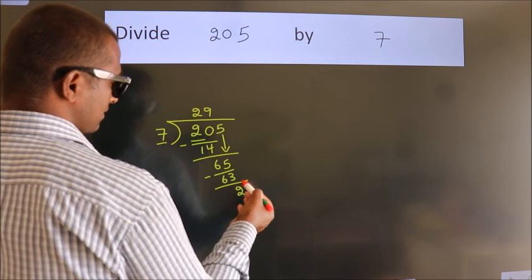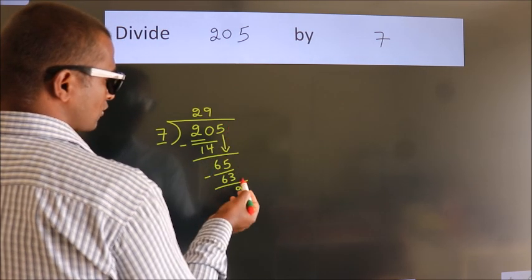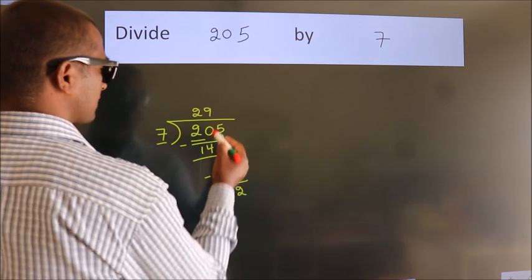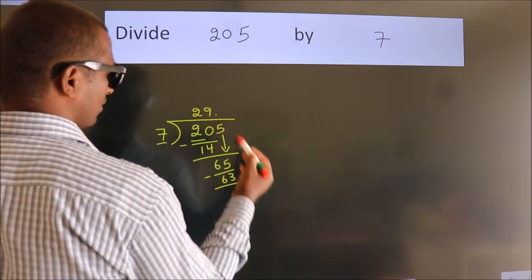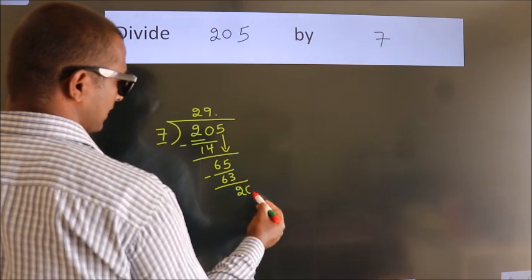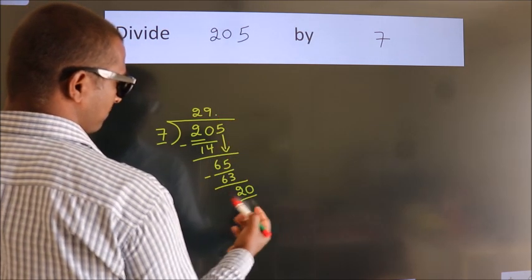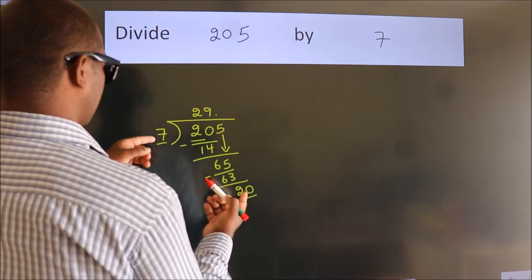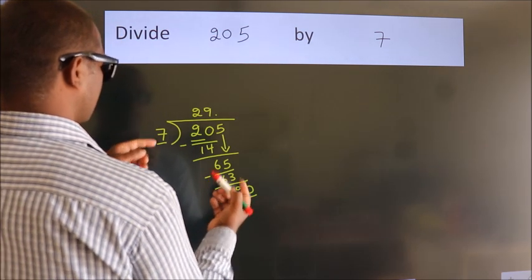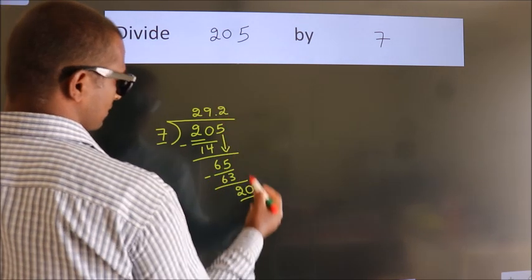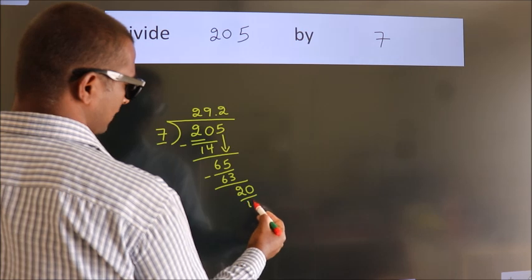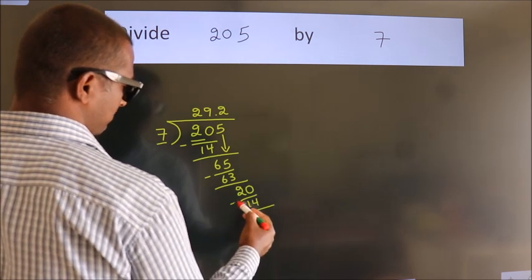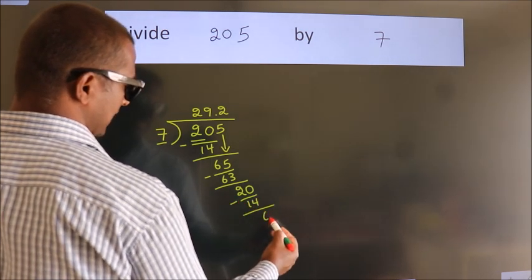After this, there are no more numbers to bring down. So what we do is put a dot and take 0, giving us 20. A number close to 20 in the 7 table is 7 twos 14. Now we subtract and we get 6.